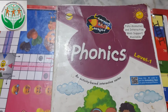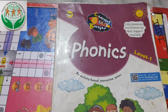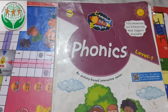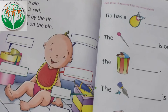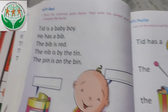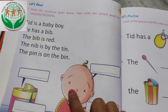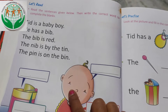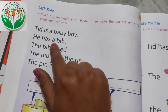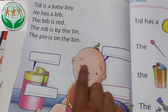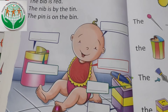Jai Hind kids! How are you all? I hope you all are great. Today is your English class and this is your phonic book. Open page number 66. Now we are going to read a story — a small story of 'ib' and 'in' family words. Read with me, and you have to fill these blanks.